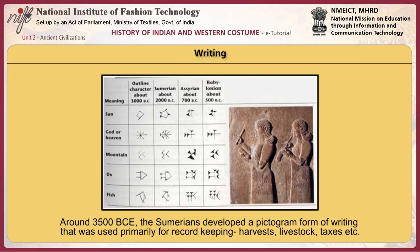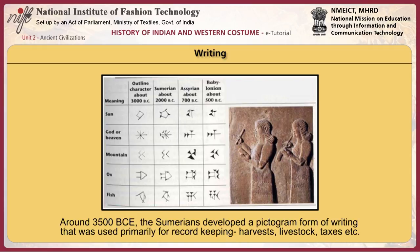Around 3500 BCE, the Sumerians developed a pictogram form of writing that was used primarily for record keeping — harvests, livestock, taxes, etc. Over a few hundred years, it evolved to a complex cuneiform form of writing, including sentence structure and standardized grammar.